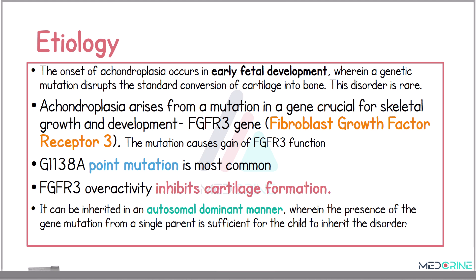Achondroplasia can be inherited in an autosomal dominant manner, where the presence of a gene mutation from a single parent is sufficient for the child to inherit the disorder.